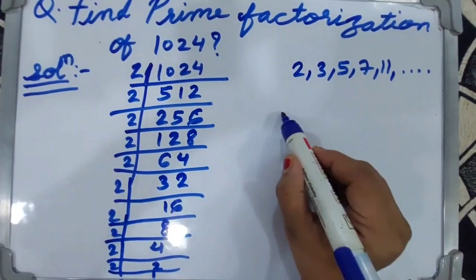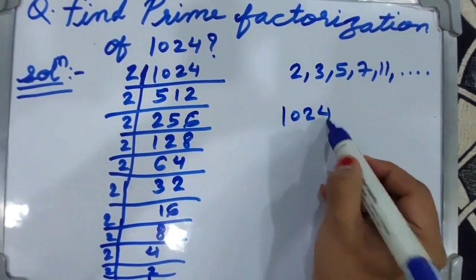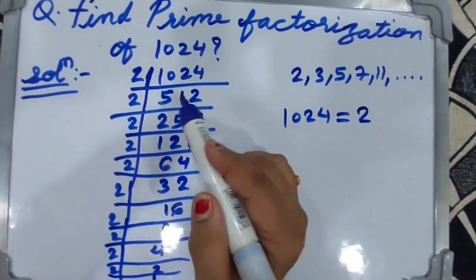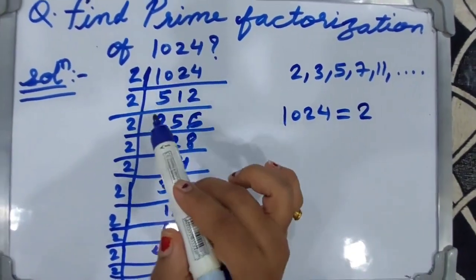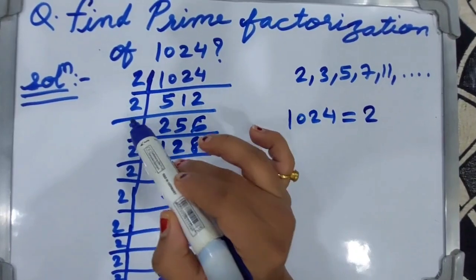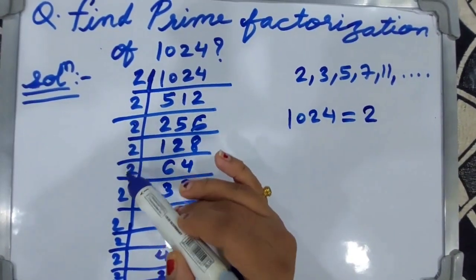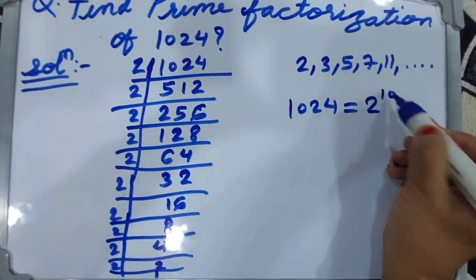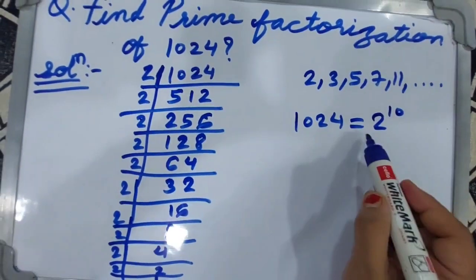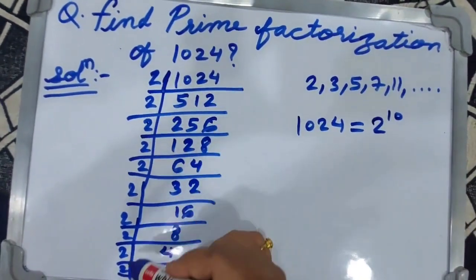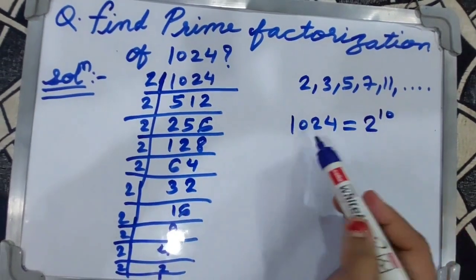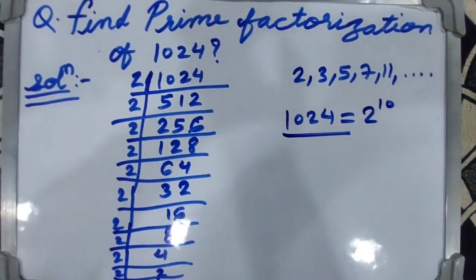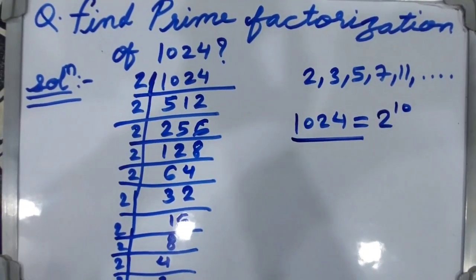Two is the common factor. How many twos are there? One, two, three, four, five, six, seven, eight, nine, ten. When you multiply all these twos together the answer is 1024. Thanks for watching, please like, share and subscribe to my channel.